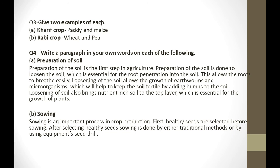The next question asks to write a paragraph on each of the following. The first part is preparation of soil. The preparation of soil is the first step in agriculture. It is done to loosen the soil, which is essential for root penetration into the soil.